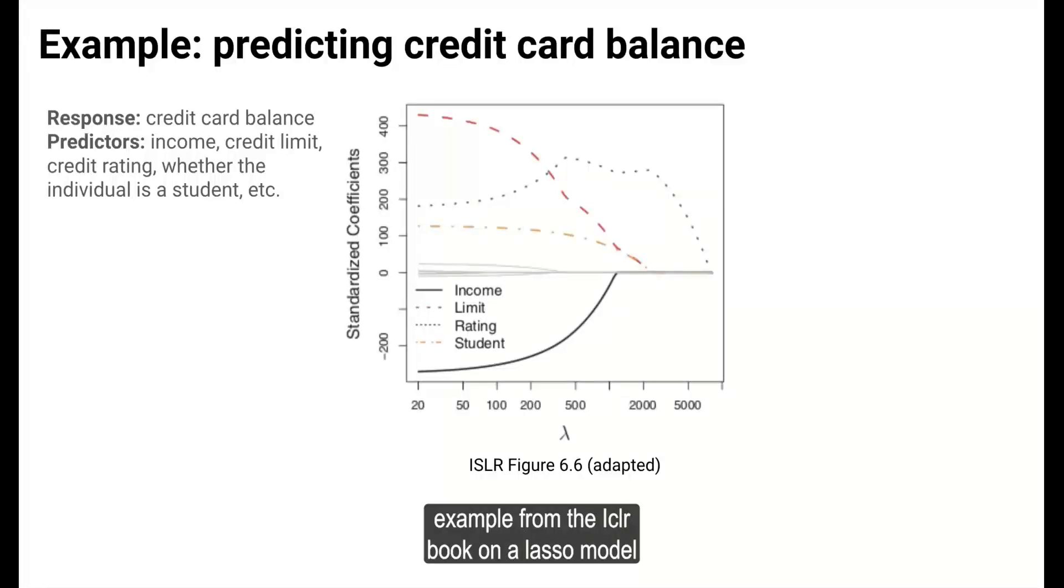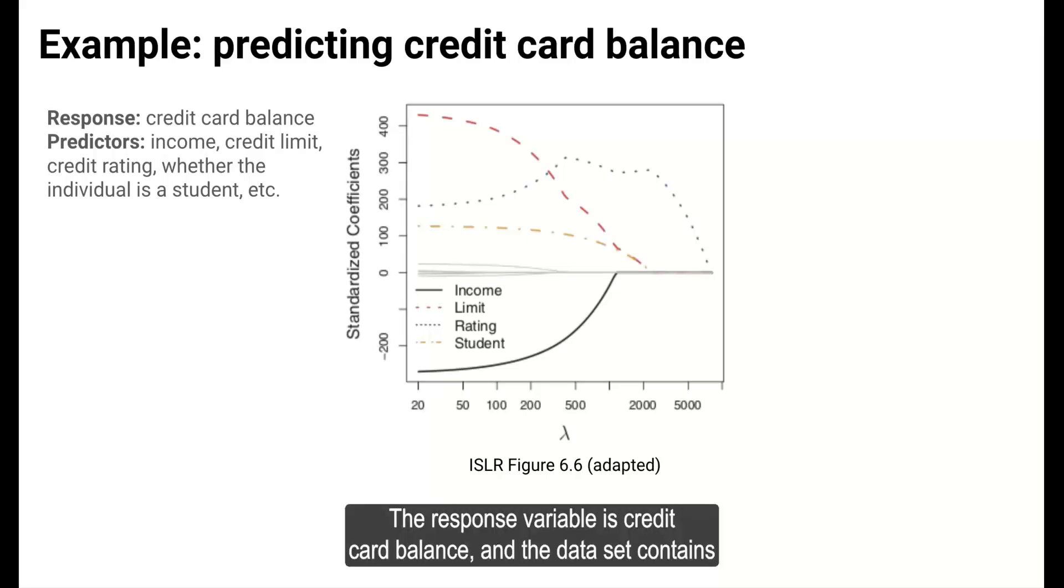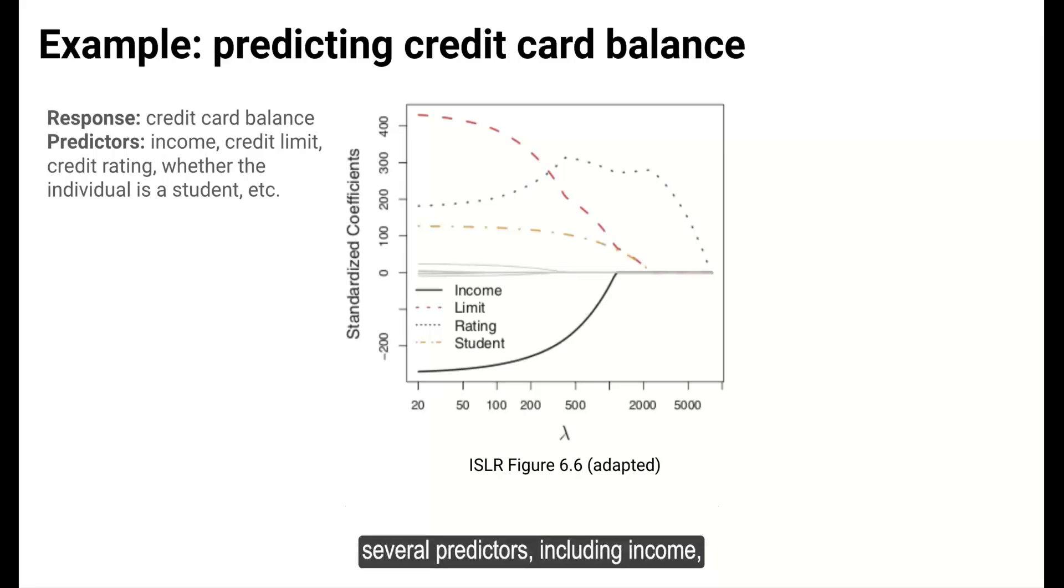Let's look at an example from the ISLR book on a LASSO model for predicting an individual's credit card balance. The response variable is credit card balance and the dataset contains several predictors including income, credit limit, credit rating, whether the individual is a student, and some other variables.